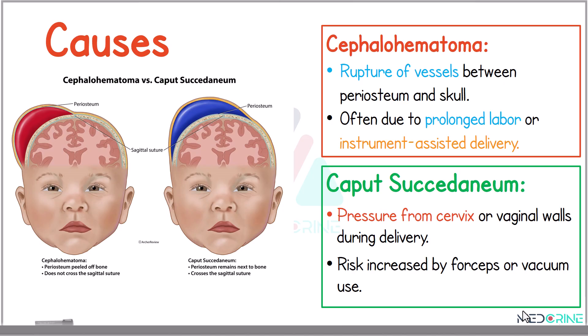In cephalohaematoma, there is a rupture of the blood vessels between the periosteum and the skull. Cephalohaematoma occurs due to prolonged labor or instrument-assisted delivery, such as vacuum-assisted delivery. On the other hand, caput succedaneum occurs due to pressure from the cervix or the vaginal walls during delivery, with increased risk in forceps or vacuum delivery.